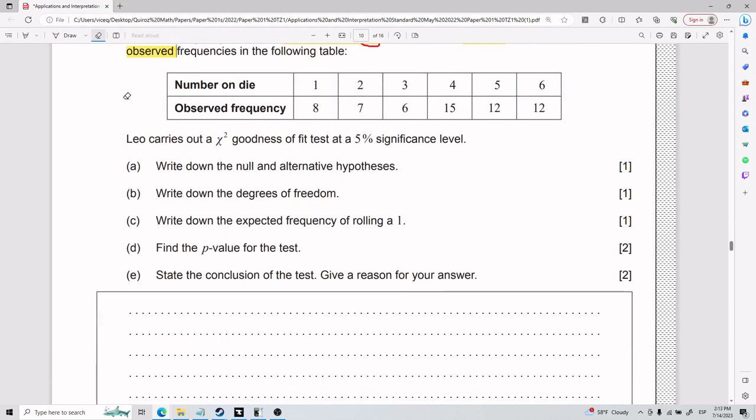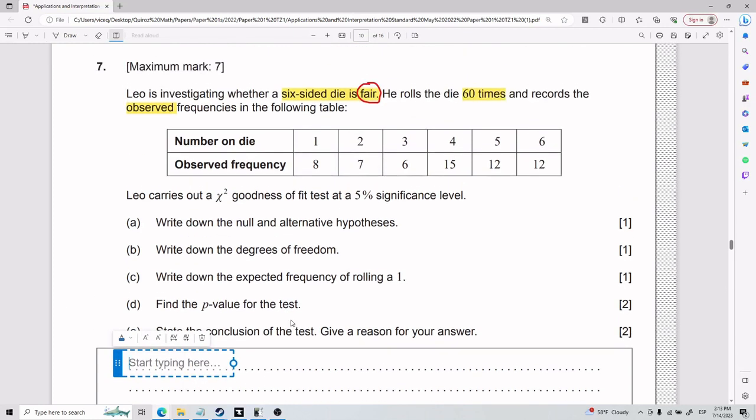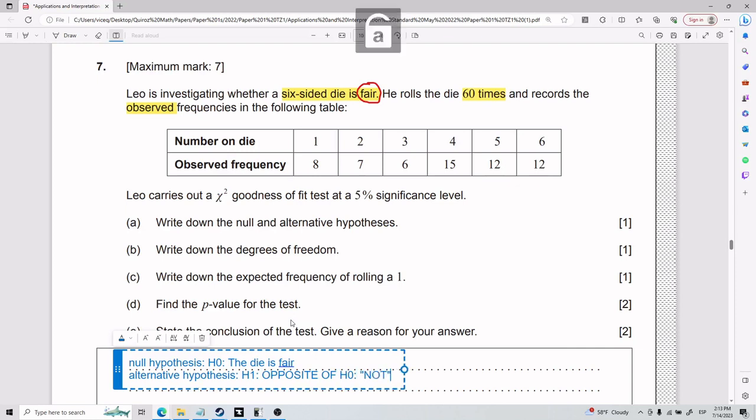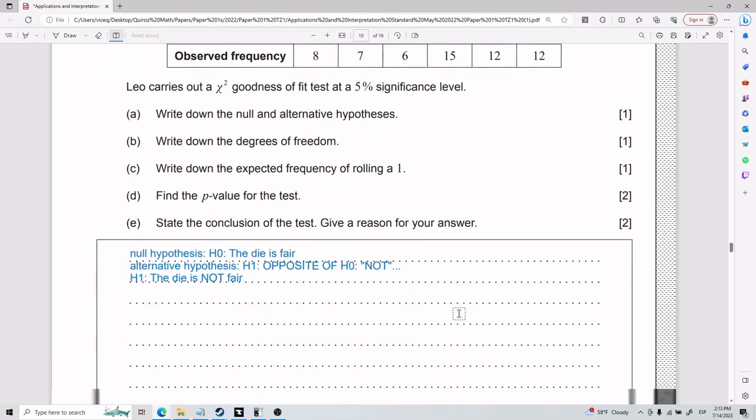So for part A, write down the null and alternative hypotheses. Basically for your null and your alternative, one of them is like what I'm investigating is true, and the other one is like what I'm investigating is not true. It's very important that for your null hypothesis, you will write it on H0. And so for H0 in this case, I will put that the die is fair.